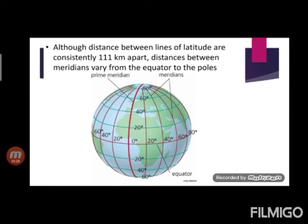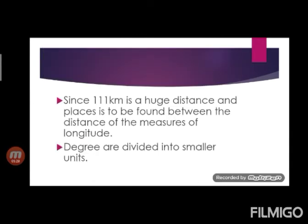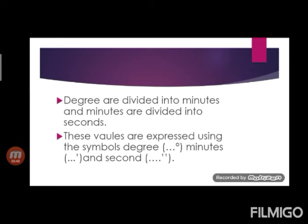All the meridians lie at the distance of 111 km. Since 111 km is huge distance and places is to be found between the distance of measure of longitude, degrees are divided into smaller units. Degrees are divided into minutes and minutes are divided into seconds. The values are expressed using symbols degrees, minutes and seconds, which we have already studied for latitudes also.